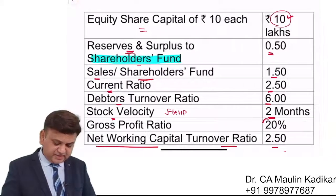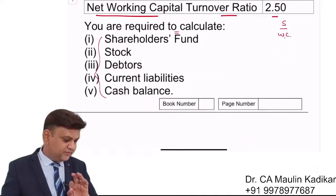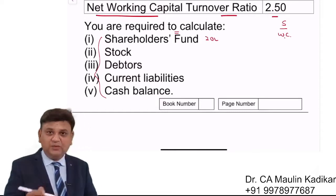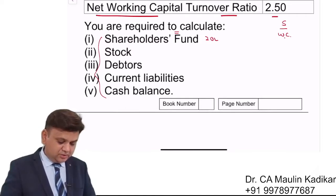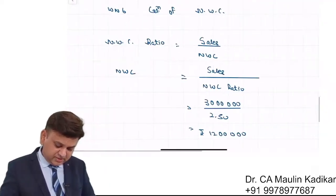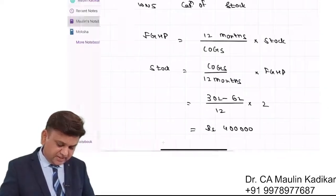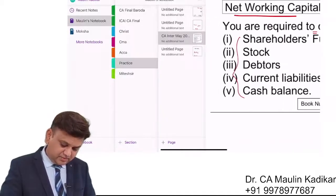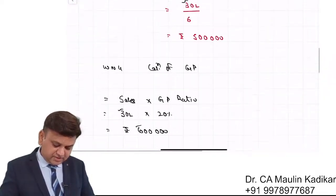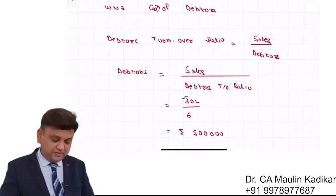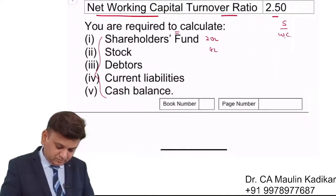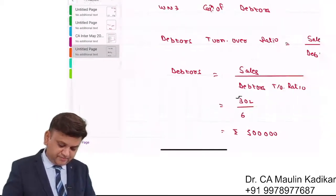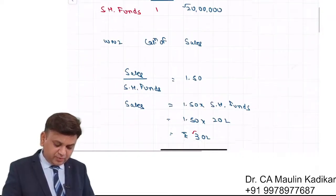Let us see the answers one by one. Shareholders funds is 20 lakhs (equity plus reserves). Stock amount has been calculated as 4 lakhs. The amount of debtors is Rs. 5 lakhs. Next we need to compute current liabilities and cash and bank balance.